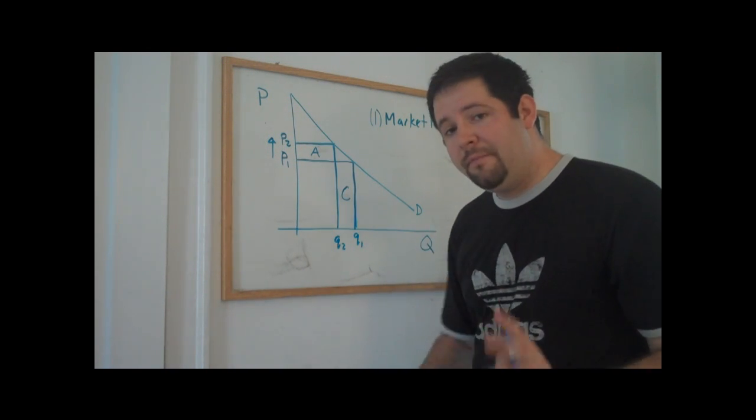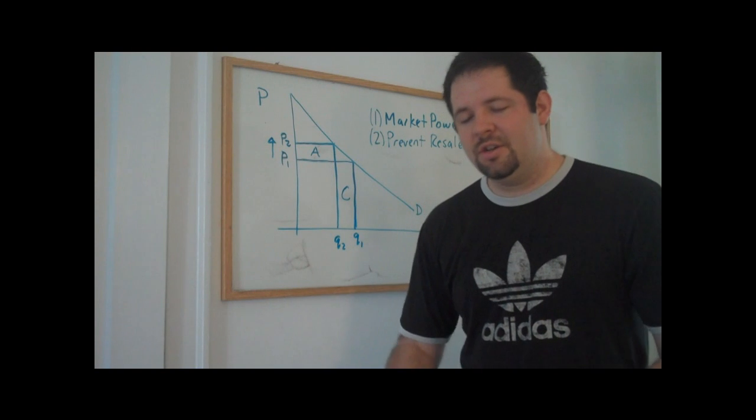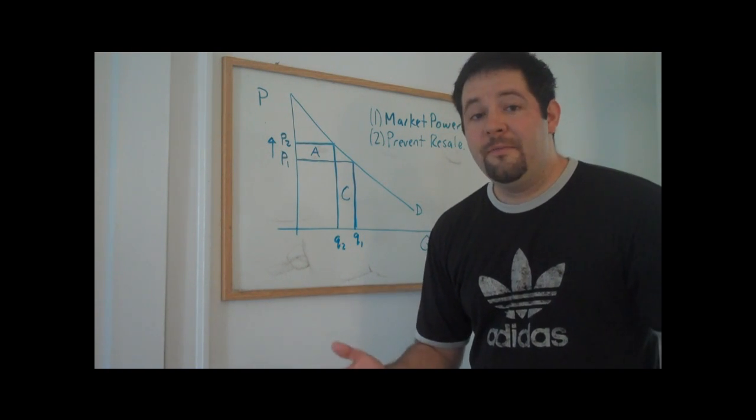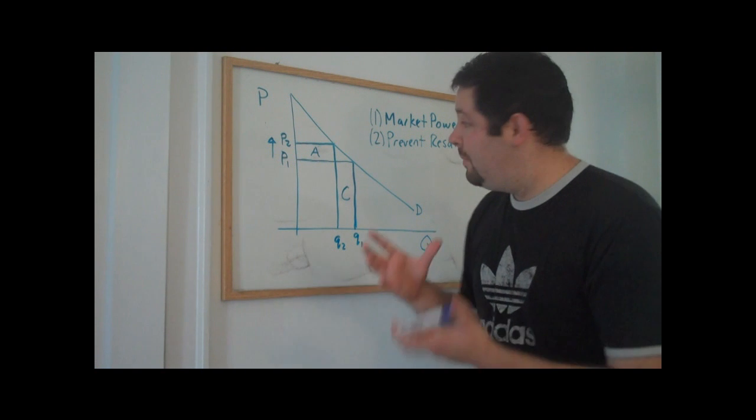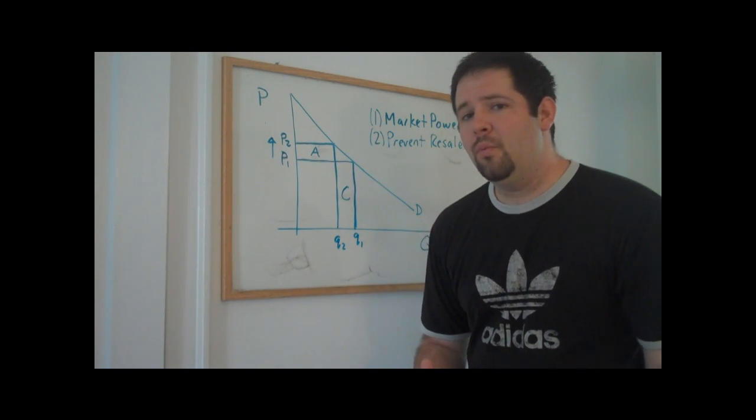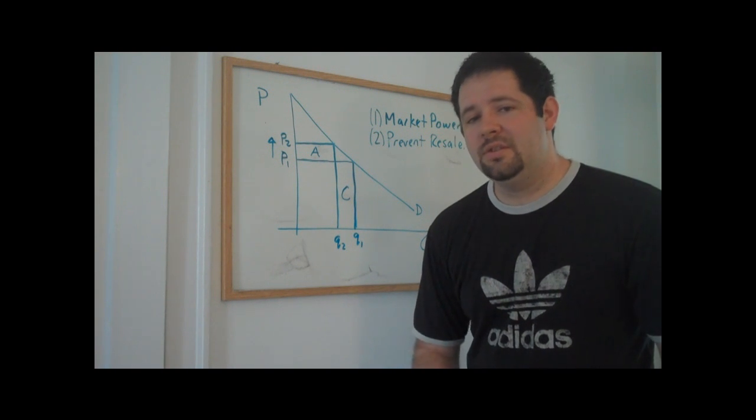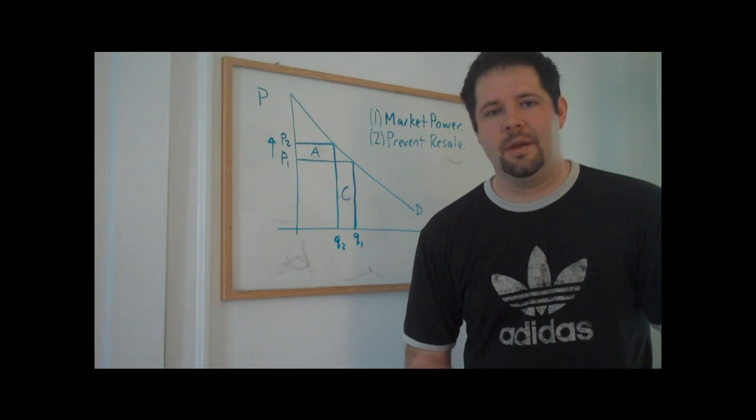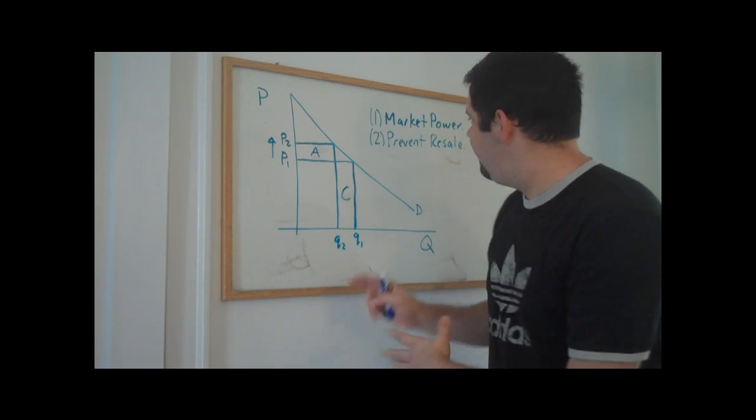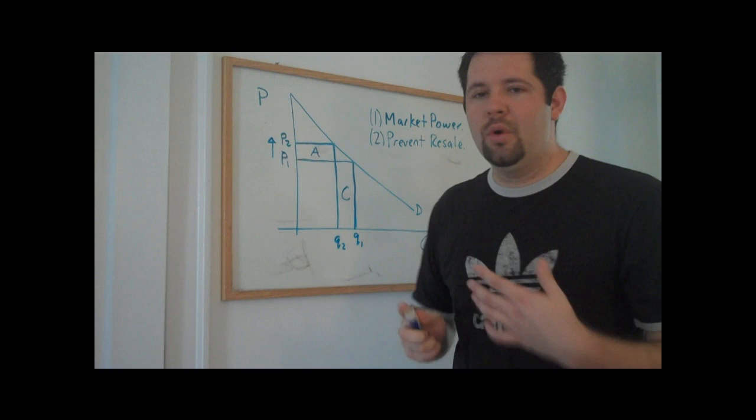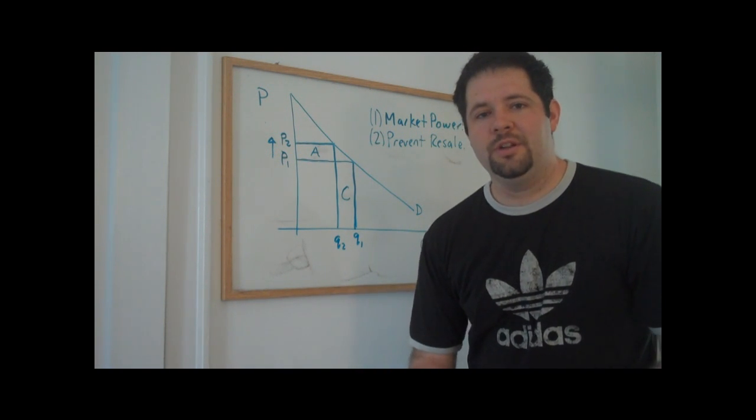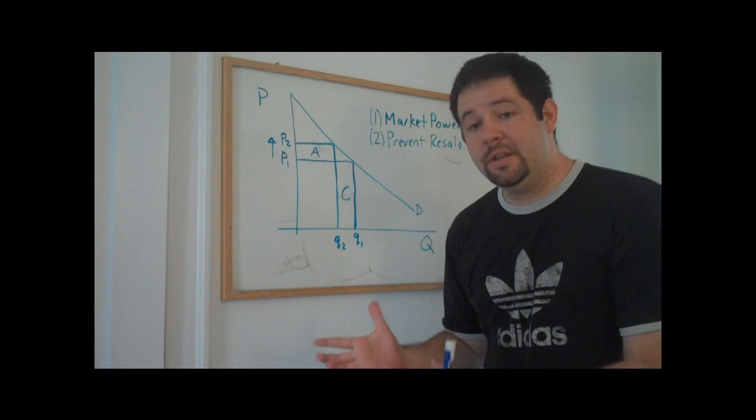Number two, the firm must be able to prevent resale. This goes back to the first condition that we need to satisfy. The firm needs to be a monopoly, needs to have some market power. If there was ability for the consumers to just buy the good and then sell it to some other consumers, they would no longer have market power. So in a very important sense, these two conditions really capture lack of competition. You need to be able to prevent resale for the product.